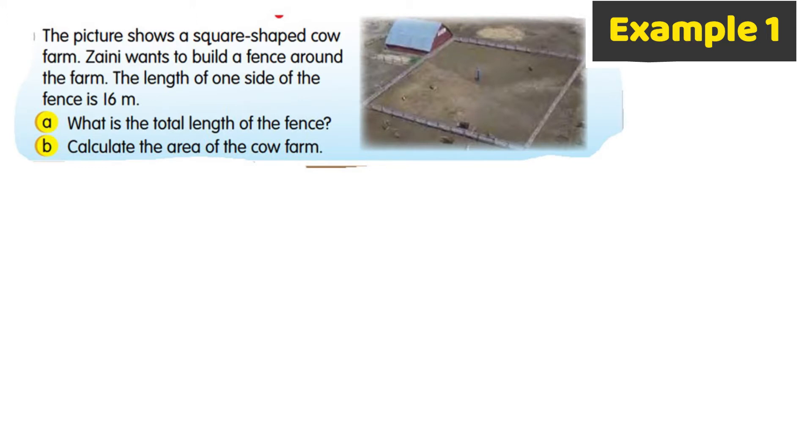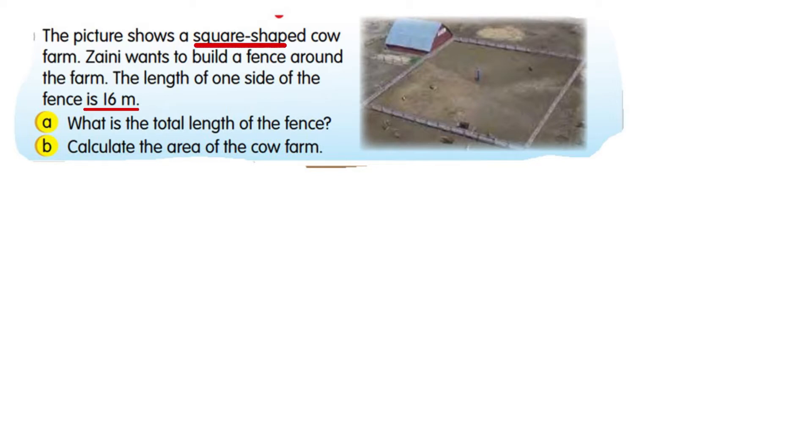The length of one side of the fence is 16 meters. Part A asks: what is the total length of the fence? First, understand the problem. We have a square shape, and the length of each side is 16 meters.